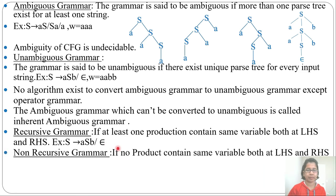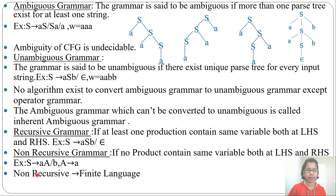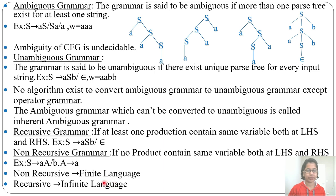Next, non-recursive grammar: if no production contains the same variable both at LHS and RHS, it is a non-recursive grammar. For example, H tends to A or B, and from A you can derive a small a. Here A is a variable and a is a terminal. If a grammar is non-recursive, then it generates a finite language. And if it is finite, it is regular. So non-recursive grammar corresponds to a regular language. Recursive grammar means it is an infinite language, and an infinite language can be regular, context-free, or recursive.